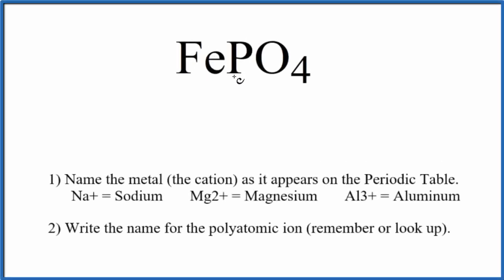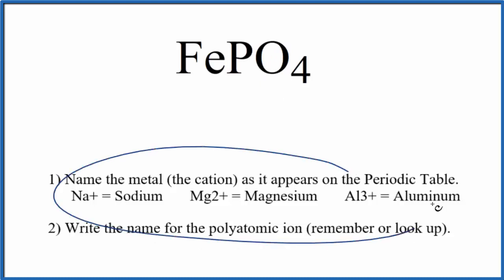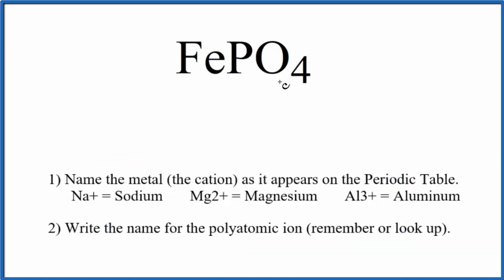To write the name for FePO4, we first need to see that we have this polyatomic ion — the phosphate ion. The phosphate ion is bonded to iron, Fe, which is a transition metal. So we have a metal and this group of non-metals here in the polyatomic ion. This is an ionic compound, and we use these rules to write the name for FePO4.